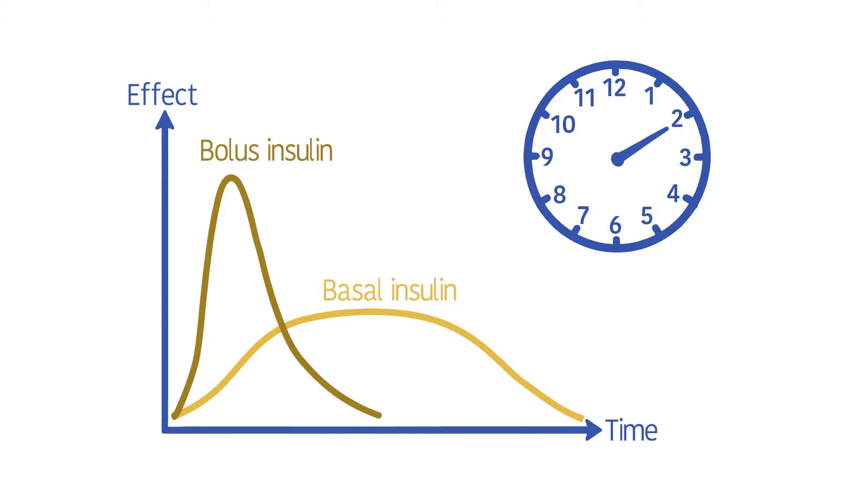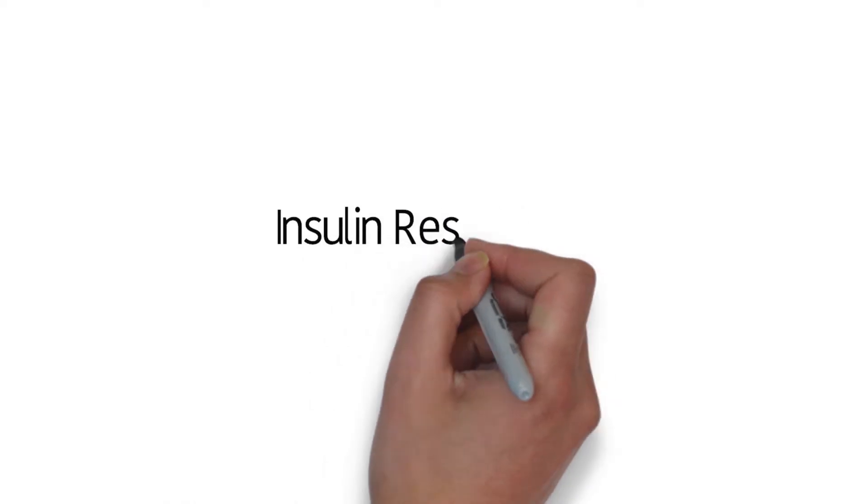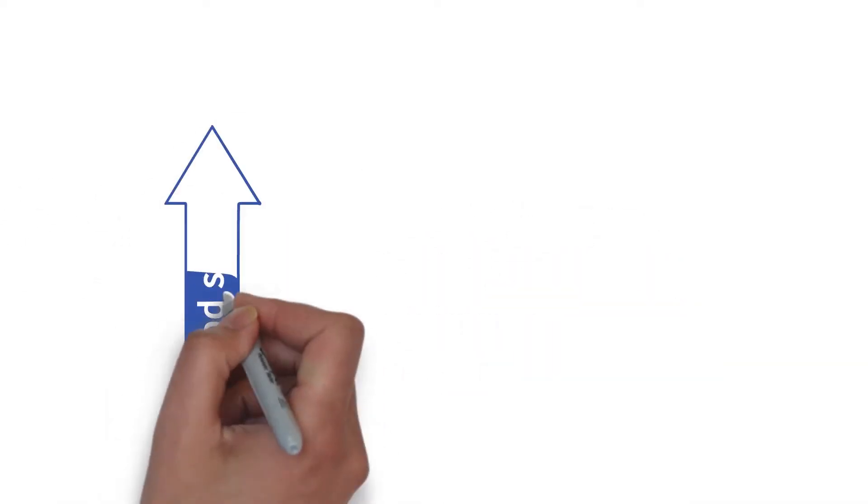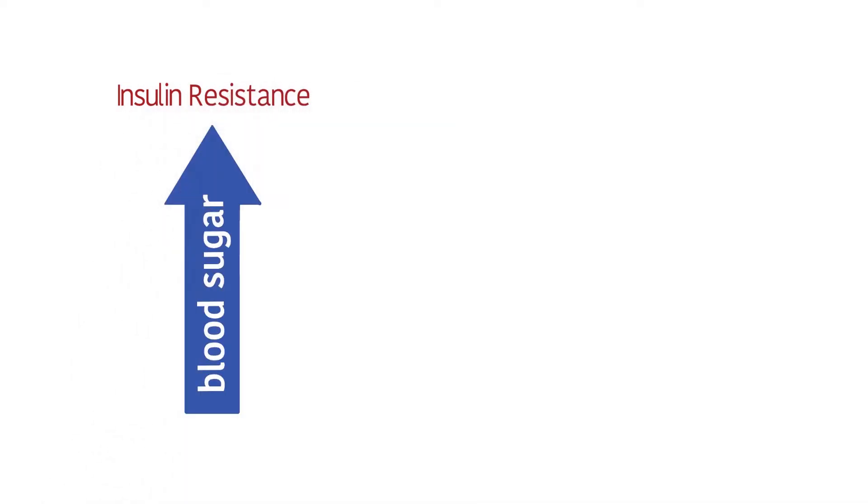Pre-mixed insulin combines a basal and bolus insulin to keep blood sugar under control between and after meals. Insulin resistance means that the body doesn't react to or use the insulin it makes appropriately, so your blood sugar goes up.